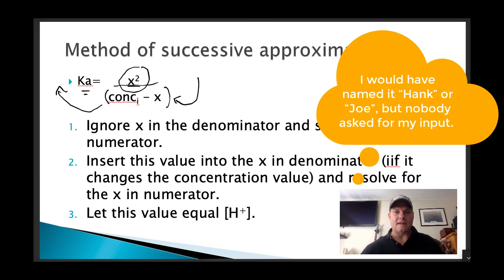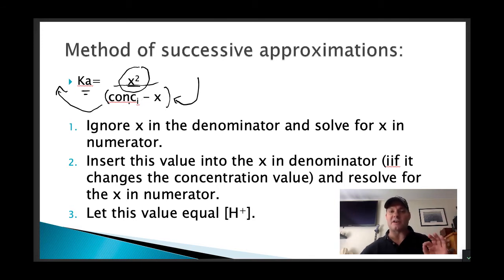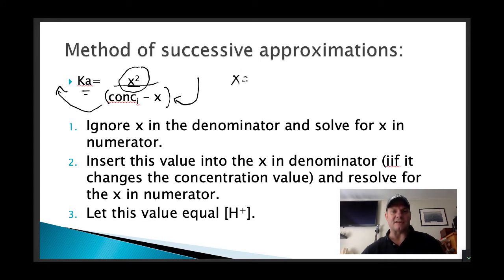It's called the method of successive approximations — a great way to solve a quadratic if you don't need exact values. We insert the X value into the denominator if it actually changes the concentration value; sometimes concentration minus X won't change it at all, and we can just ignore it. When we solve for X, remember X is our hydrogen ion concentration, so the negative log of that gives us our pH.